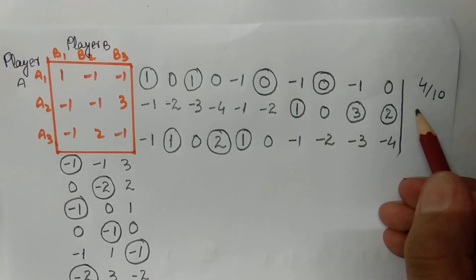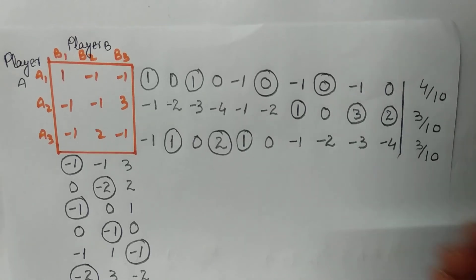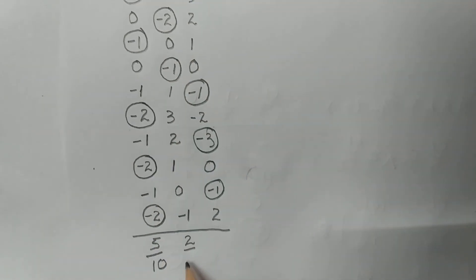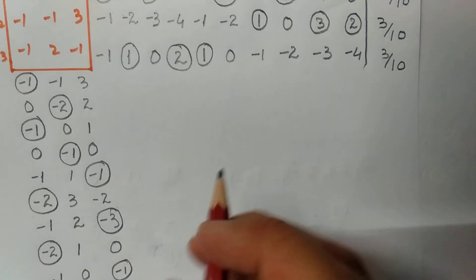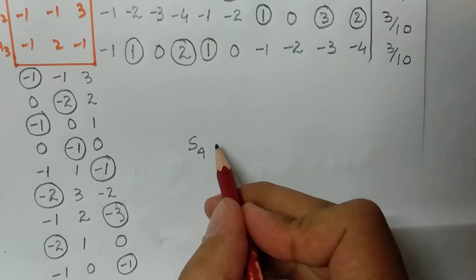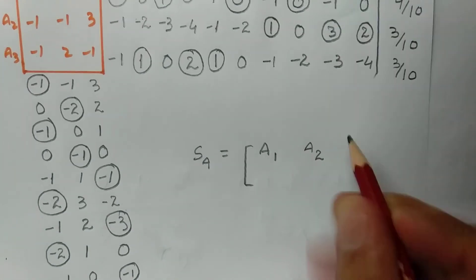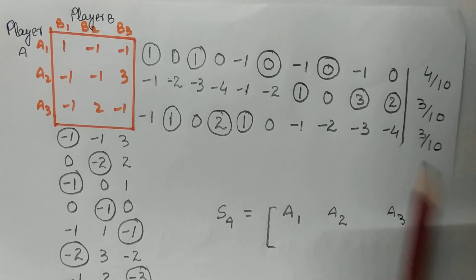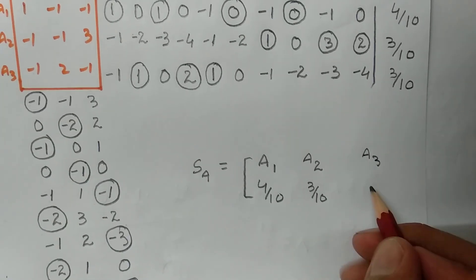Counting encircled elements: row two has three encircled, so 3/10; row three also has three, so 3/10. For Player B's columns: column one has five encircled, so 5/10; column two has two, so 2/10; column three has three, so 3/10. The approximate strategies for Player A are: A1 = 4/10, A2 = 3/10, A3 = 3/10.